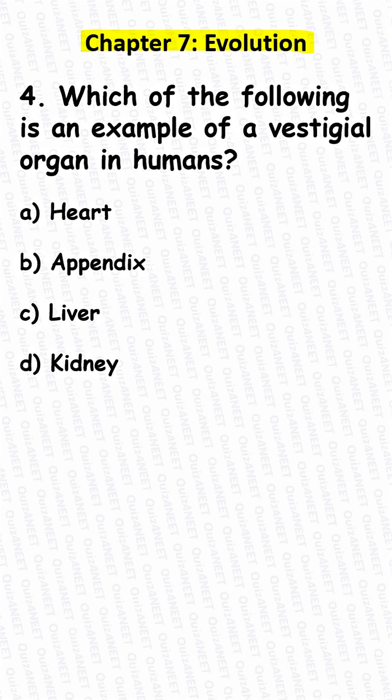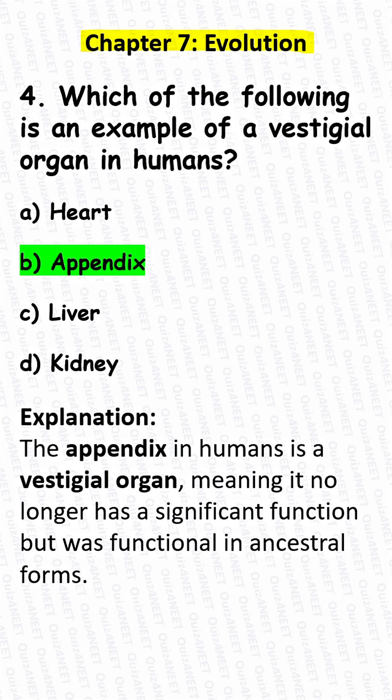Question 4. Which of the following is an example of a vestigial organ in humans? A. Heart. B. Appendix. C. Liver. D. Kidney.